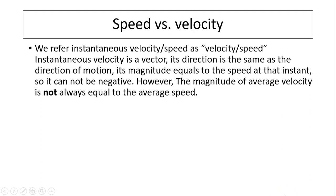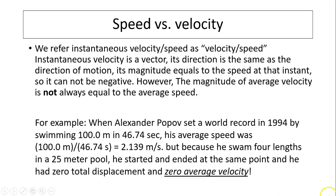Speed versus velocity: we refer to instantaneous velocity or speed simply as velocity or speed. Instantaneous velocity is a vector quantity — its direction is the same as the direction of motion and its magnitude is the speed at that instant, so speed can never be negative. However, the magnitude of average velocity is not always equal to average speed. For example, when Alexander Popov set a world record in 1994 by swimming 100 meters in 46.74 seconds, his average speed was 2.139 m/s, but because he swam four lengths in a 25-meter pool, he started and ended at the same point — zero total displacement and zero average velocity.